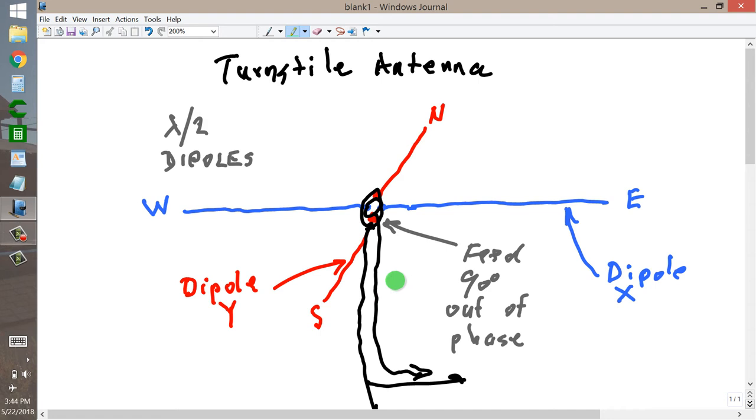Well, it turns out that you get a nearly omnidirectional pattern. But you sacrifice about 3 dB of gain from a regular dipole, because you're splitting the power between the dipoles. To some, that's not a big deal. To others, it is.